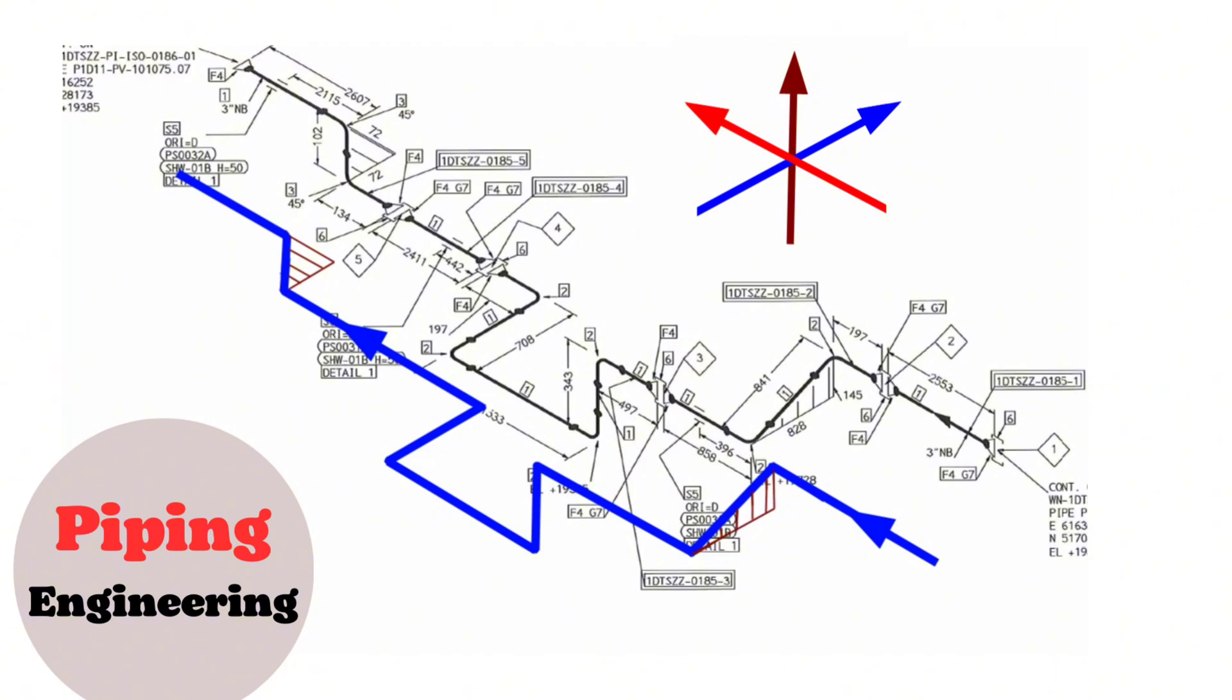There are such six-arrows scheme, usually showing in all piping isometric drawings. North direction, South direction, East direction, West direction, Up direction, Down direction.